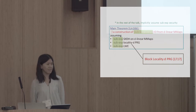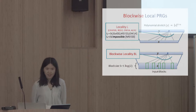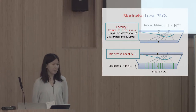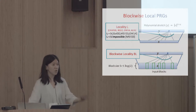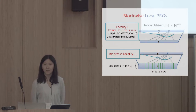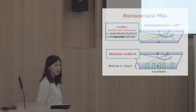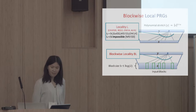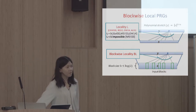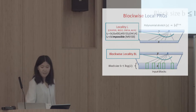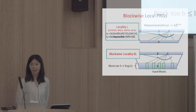What are blockwise local PRGs? A local PRG has polynomial stretch, and locality is the maximum number of input bits each output bit depends on. There have been many studies on the lowest locality admitting a PRG. We have candidates for locality 5, and we know locality smaller than 5 is impossible. The more relaxed notion we propose is called blockwise locality. Here, instead of thinking about the seed as a bit string, we think of it as a bit matrix. The block locality is the maximum number of input columns — input blocks — that each output bit can depend on.